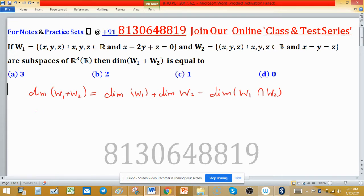Find dimension of W1. Elements have this property: x minus 2y plus z equal to 0. x, y, z are three variables, so you are independent only on two variables to pick any value.